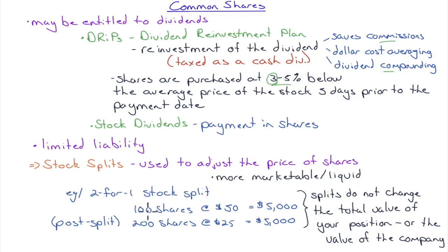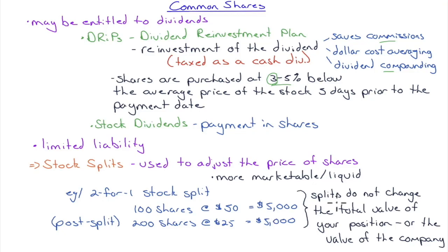In a 2-for-1 stock split: if you have 100 shares at $50 each, you own $5,000 worth of stock. Post-split, you have 200 shares at $25 each — still $5,000. The split makes shares more marketable, but it does not change the total value of your position or the value of the company. That's all splits do.